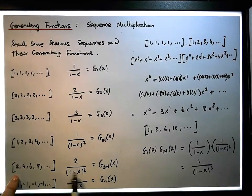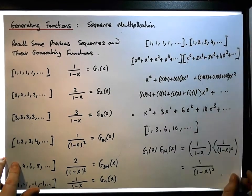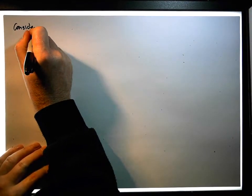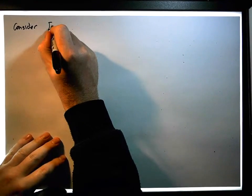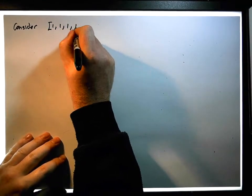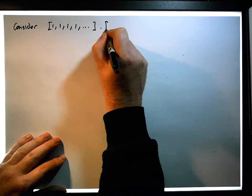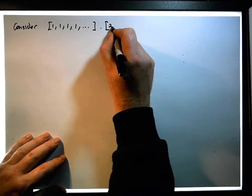So let's actually just do that. Let's consider the product of the constant sequence of 1s — 1, 1, 1, 1, dot dot dot — and we're going to multiply that by the constant sequence of 2s.